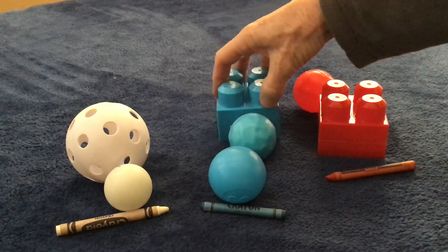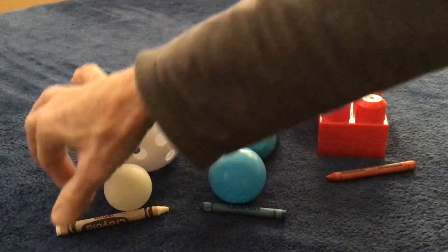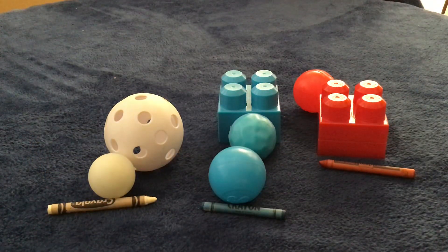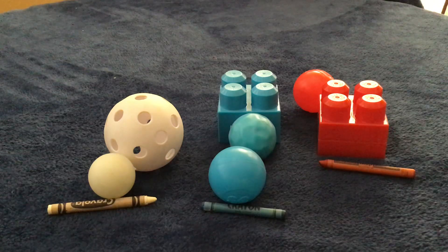So they're being sorted so that the one attribute of color is the same in that group. Another way to sort these objects would be by shape.